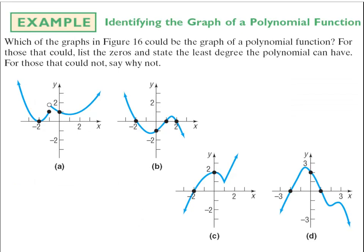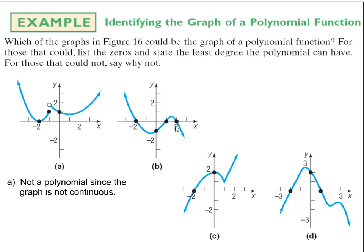In a comprehensive example, we determine which graphs could be polynomial functions. Letter a is not a polynomial because its graph is not continuous — there's a break. Letter b is smooth and continuous, so it could be a polynomial with zeros at negative 2, 1, and 2. It has 2 turning points, so the least degree it could have is 3, since a degree 3 polynomial has at most 2 turning points.